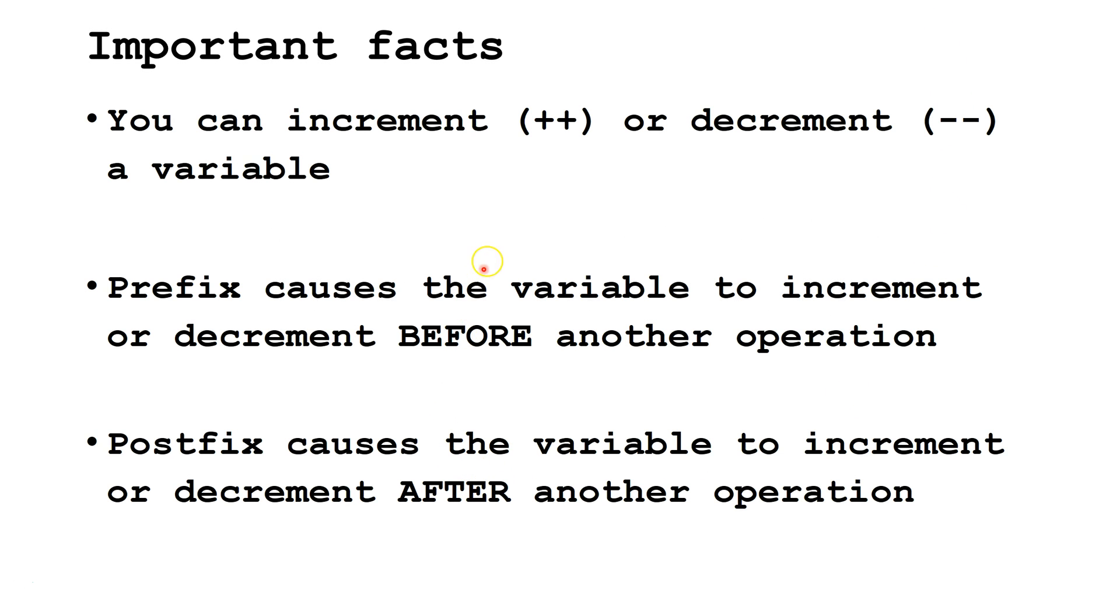Some important facts to know: You can increment or decrement the value of a variable using double plus or double minus. Prefix causes a variable to increment or decrement before another operation. Postfix causes a variable to increment or decrement after another operation.